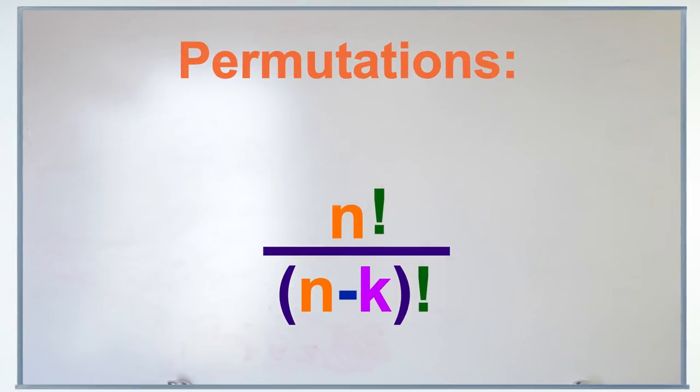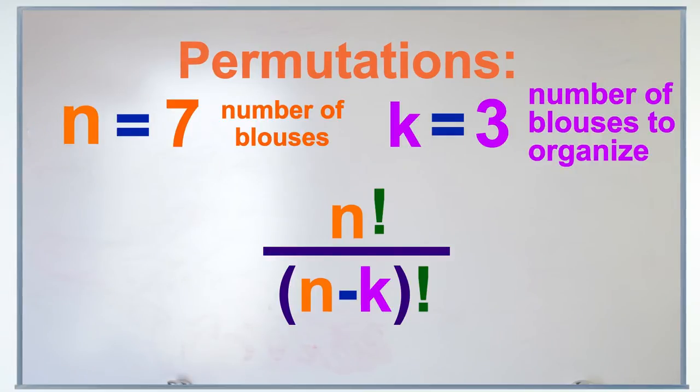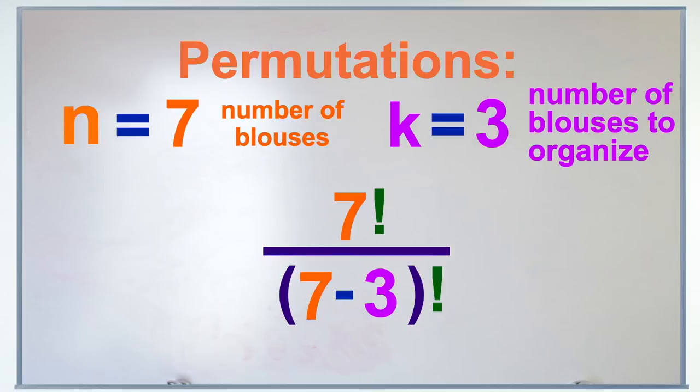In the case of the blouses, our n is 7, the number of blouses, and our k is 3, the number of blouses we want to organize. So, plugging it into our formula, we'd have 7 factorial over the quantity 7 minus 3 factorial.